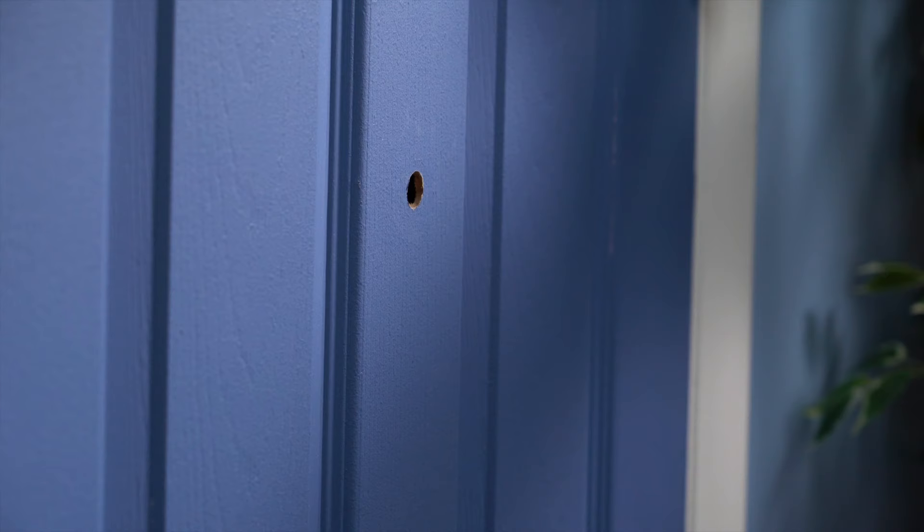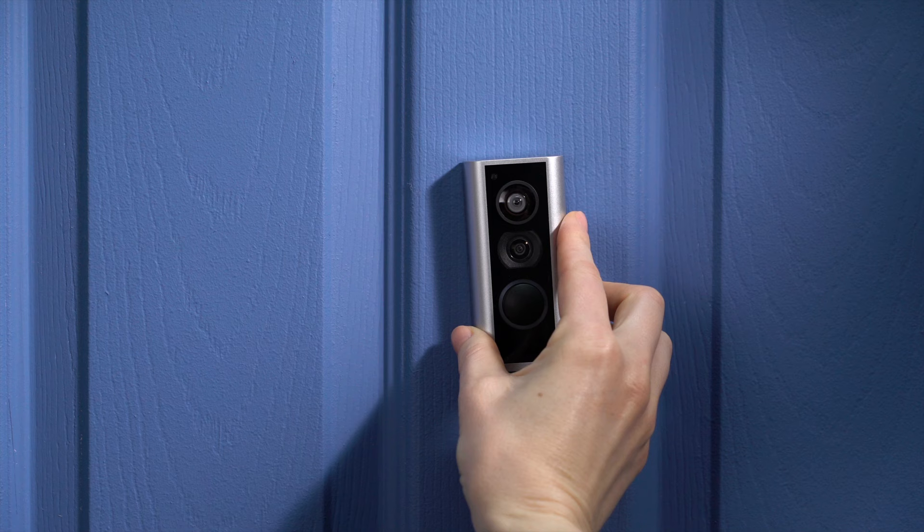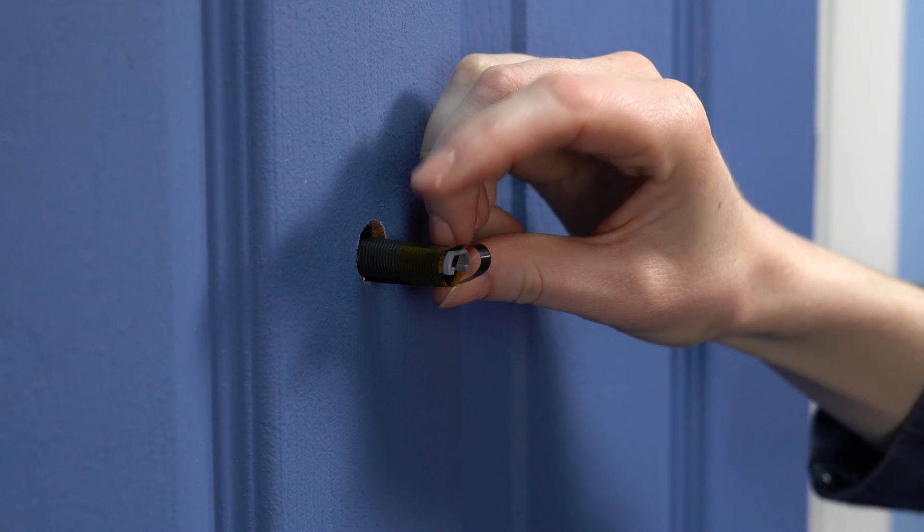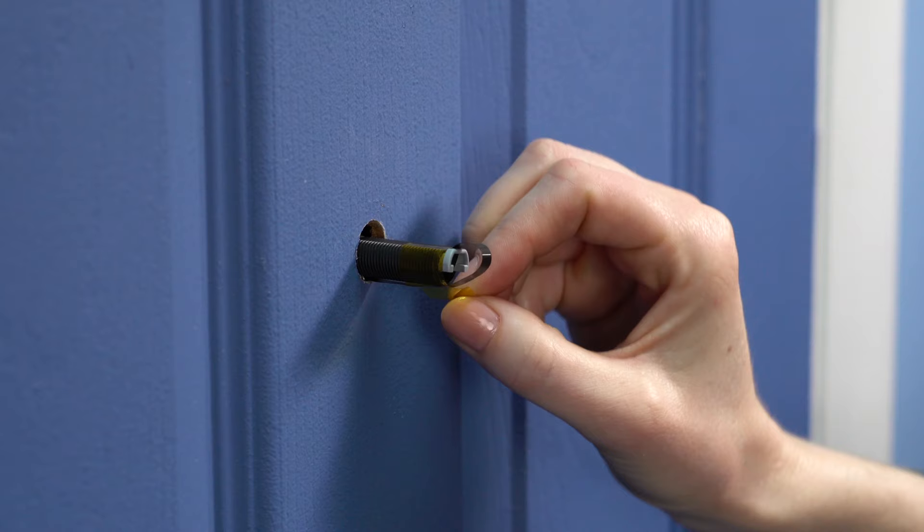With the peephole removed, insert the outdoor assembly through the hole until your peephole cam sits flush against the door. If your peephole cam has yellow tape securing the cable to the tube, peel it off and discard it now.